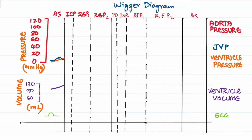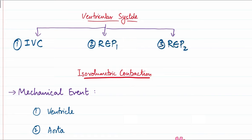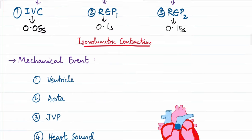Ventricular systole is divided into three phases: the isovolumetric contraction phase (IVC), the rapid ejection phase, and the reduced ejection phase. The IVC lasts 0.05 seconds, the rapid ejection phase lasts 0.1 seconds, and the reduced ejection phase lasts 0.15 seconds, making a total ventricular systole of 0.3 seconds.